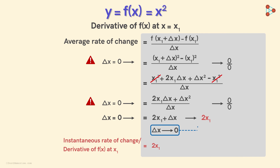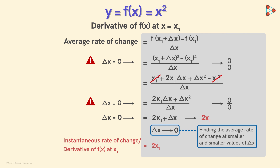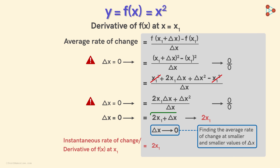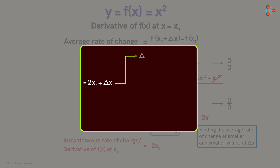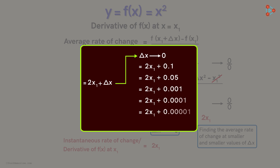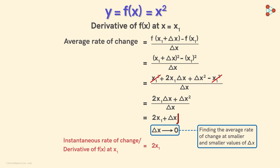What delta x tends to zero means is that we are considering smaller and smaller values of delta x — the values are close to zero but never zero. But in the final step, delta x does not explicitly occur in the denominator. So it's easy to see that as delta x gets smaller and smaller, the average rate gets closer and closer to 2 times x1. Substituting delta x equal to zero there is just a convenient way to reach this conclusion, but always be aware of what it really means.